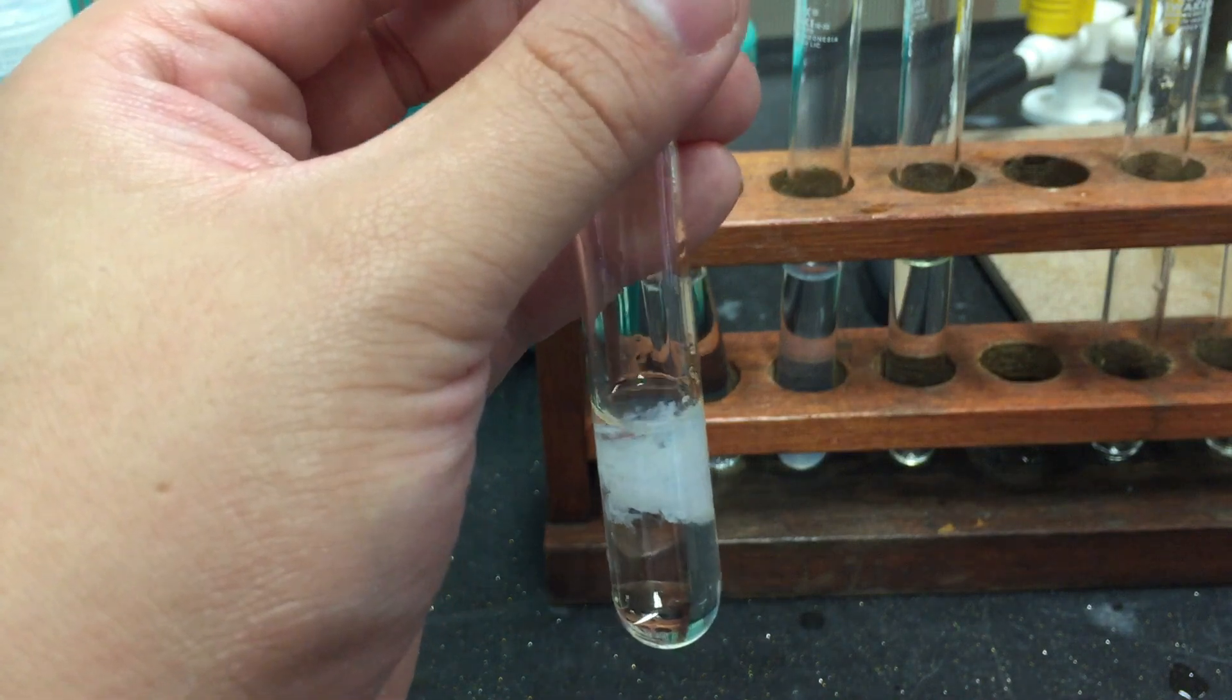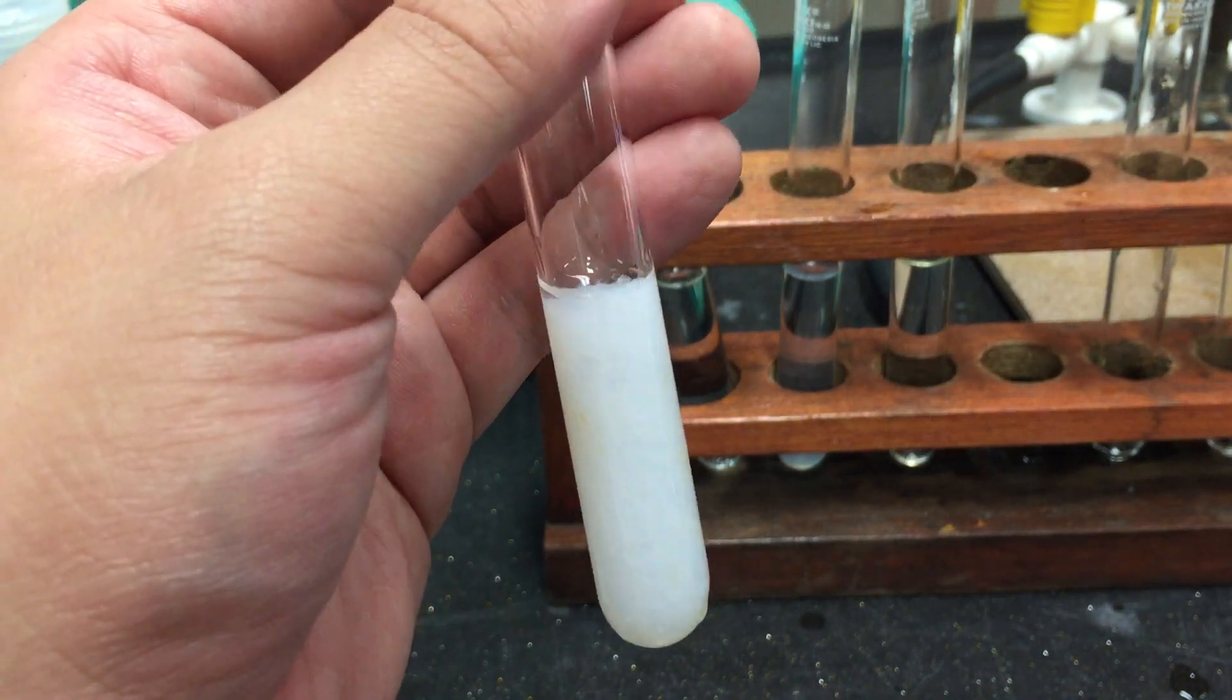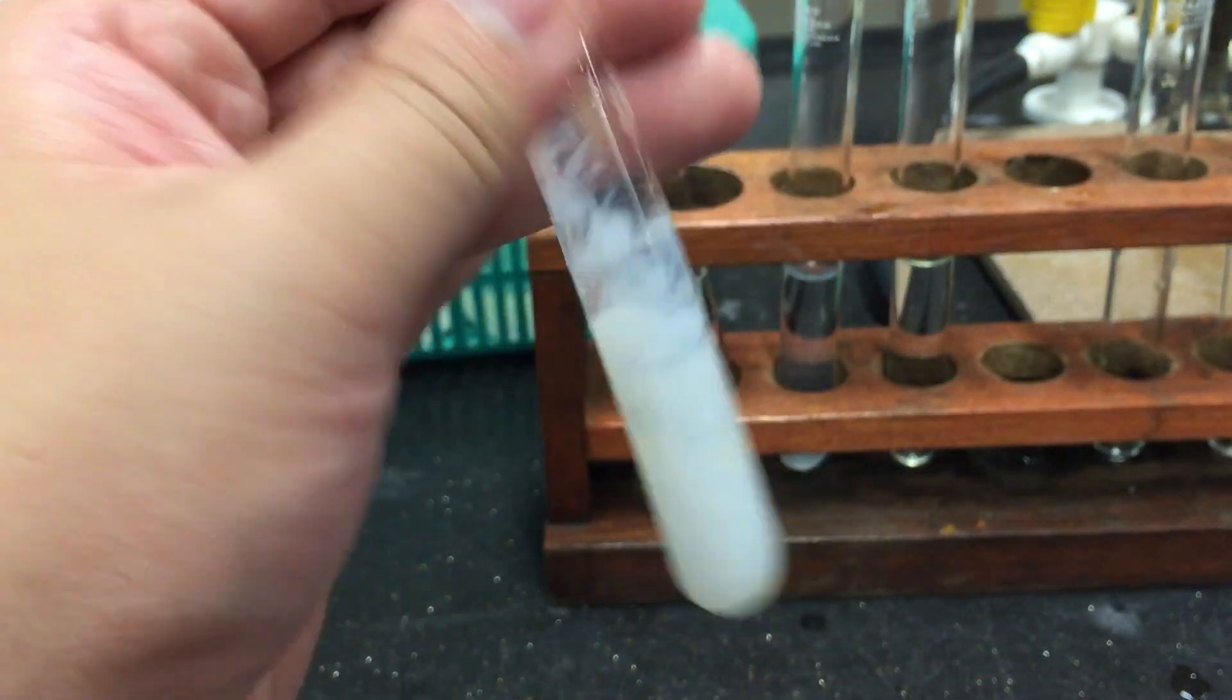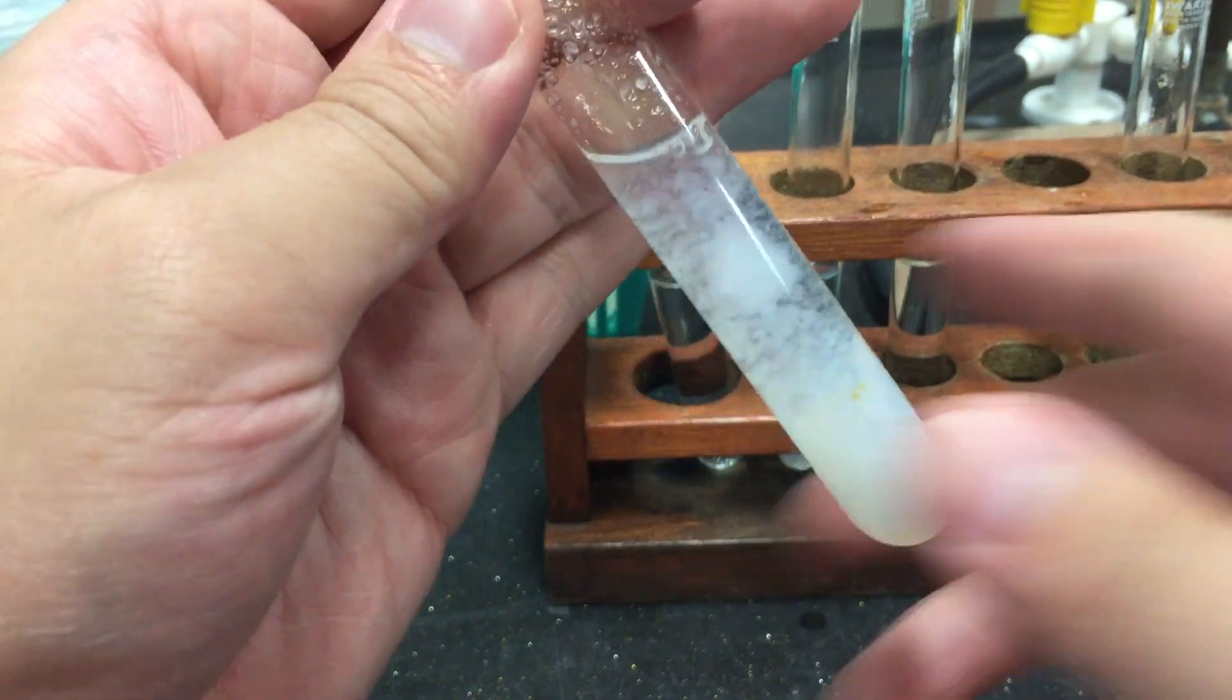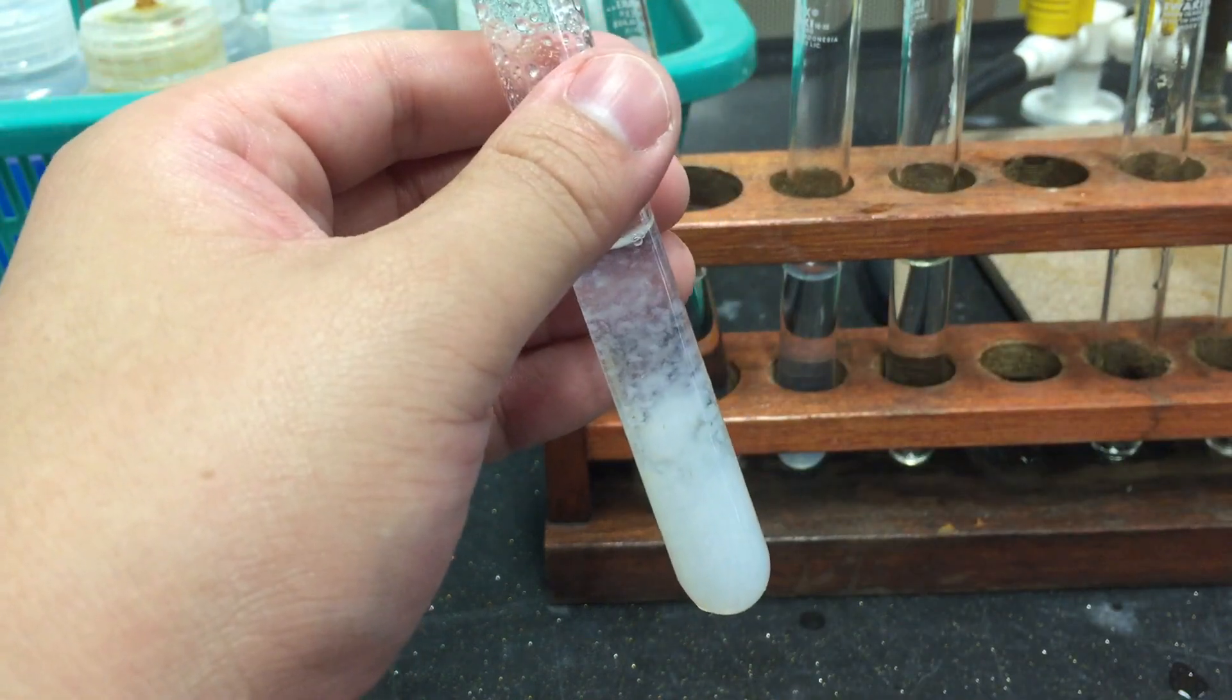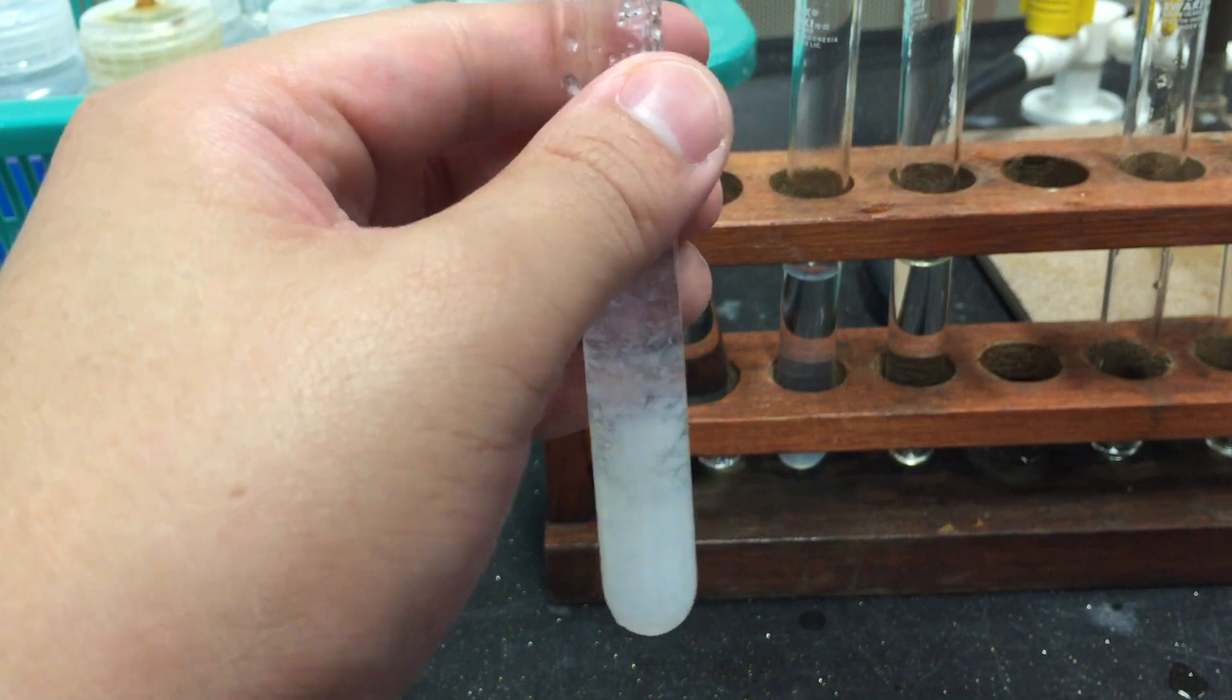Proceed to add excess ammonia solution. If there is too much precipitate, pour out the solution to leave only a small amount of precipitate.